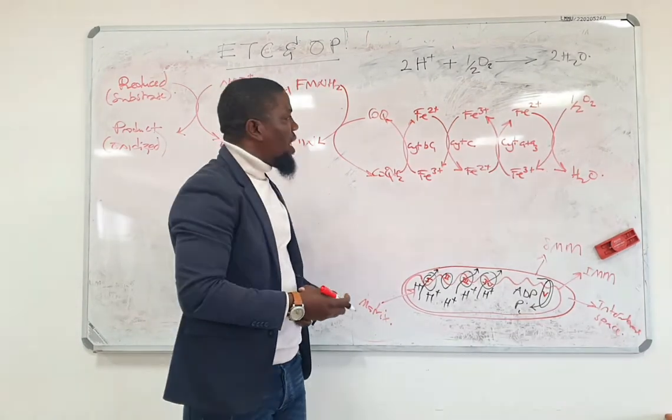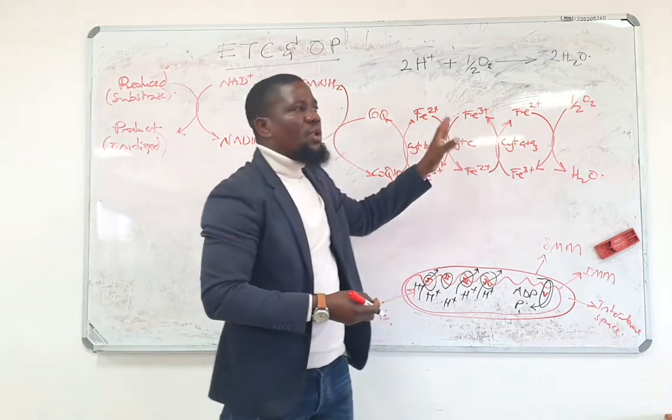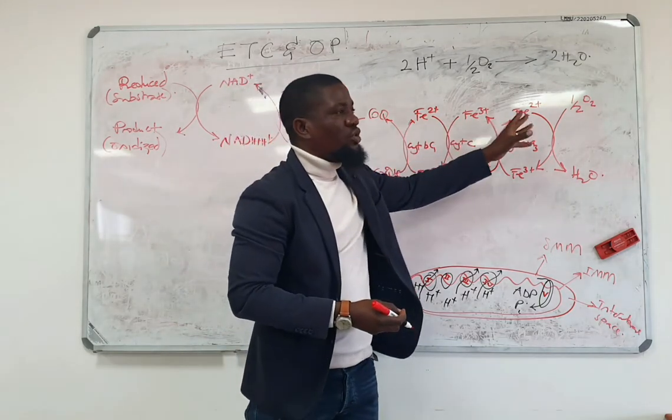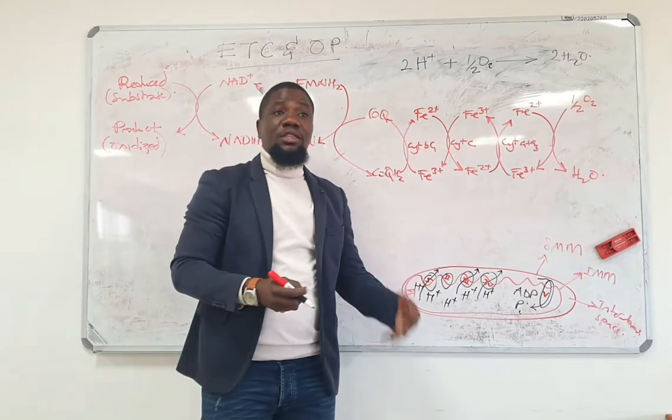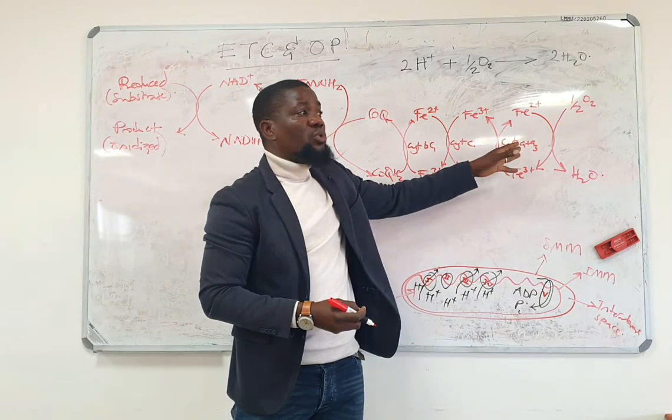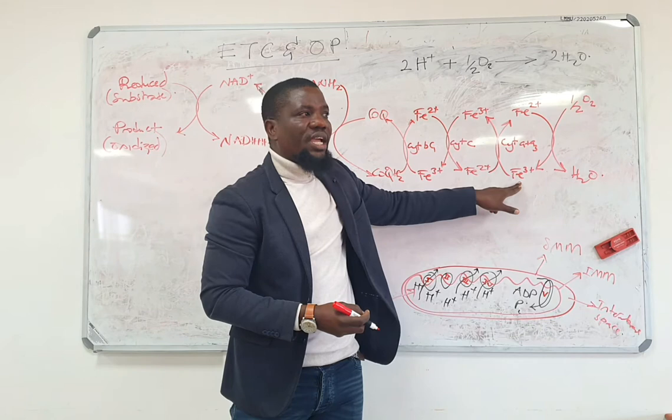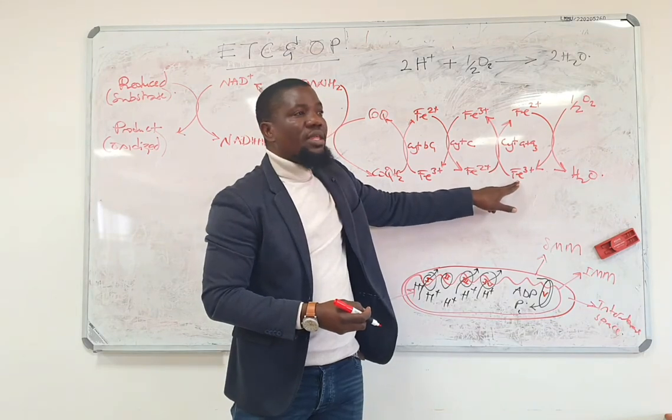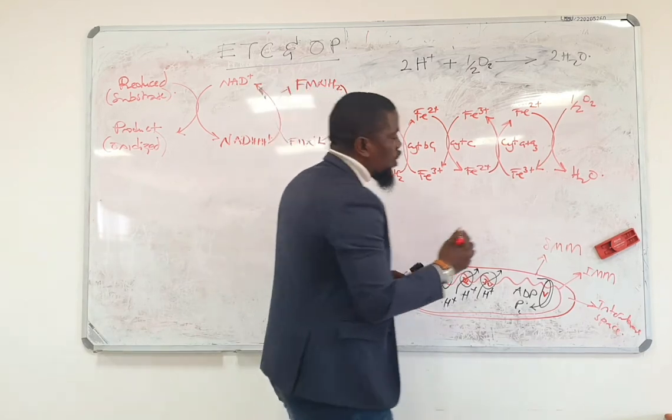You would probably wonder why is it that these other cytochromes are not able to pass their electrons onto free oxygen but to other cytochromes. The reason is simple. Cytochrome oxidase is the only one which is able to do this because closely bound or closely attached to the iron sulfur center in cytochrome oxidase is a copper.